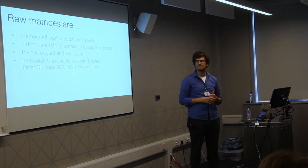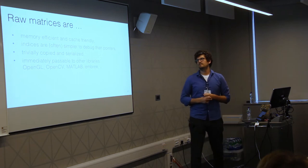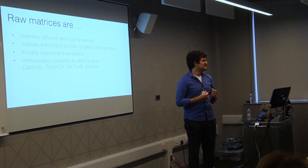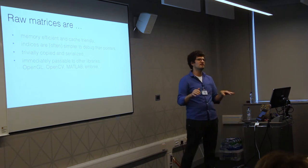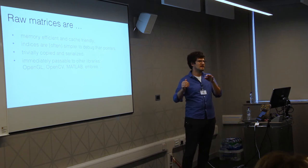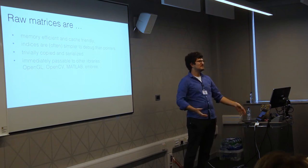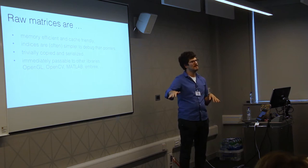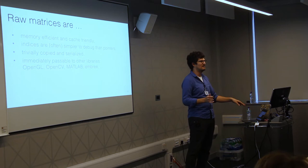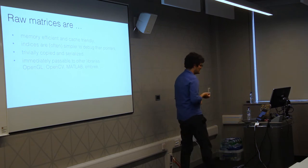Storing raw matrices has many advantages: it's memory efficient, cache friendly, indices are simpler to debug than pointers, and raw matrices can be trivially copied and serialized. It's also the least common denominator between data types. LibIGL takes the least common denominator across all data types, which makes it very easy to pass our data to other libraries like OpenGL, OpenCV, MATLAB, and Seagull.